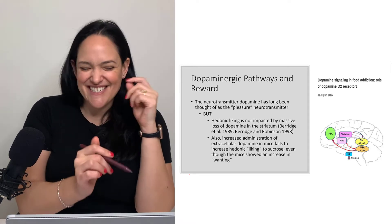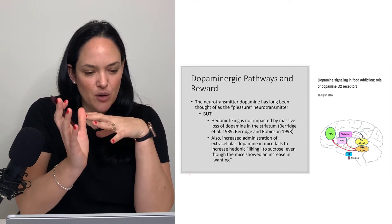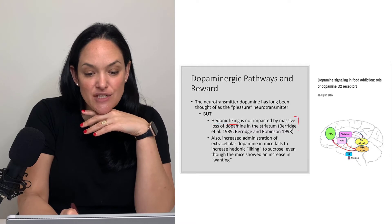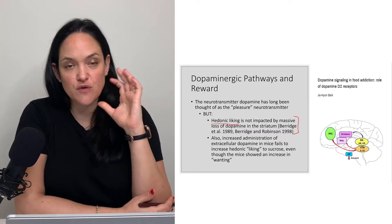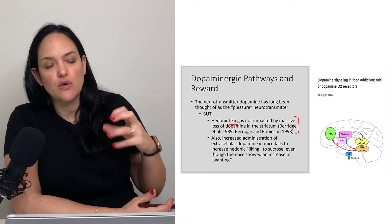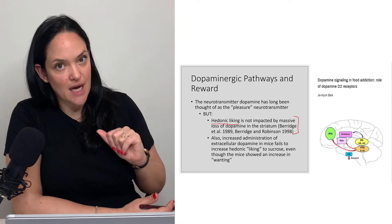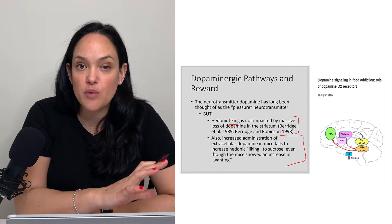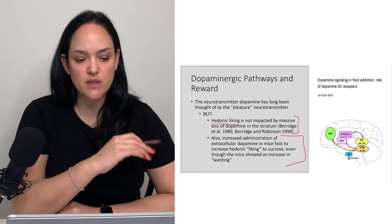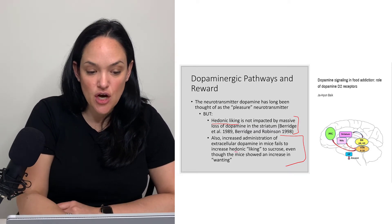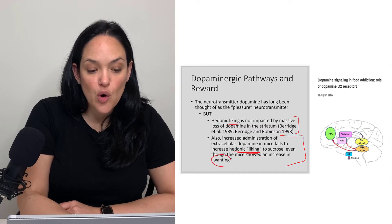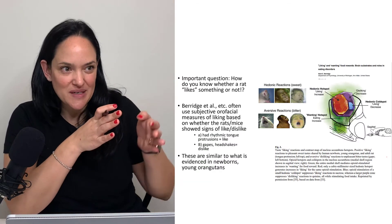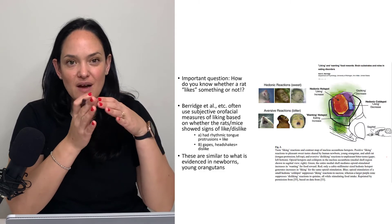Some evidence suggests dopamine is not about liking: when we look at hedonic liking, it is not compromised by massive dopamine loss. If there's less dopamine in the striatum, you would expect less liking if it were the liking neurotransmitter, but it doesn't seem to impact that. Also, if we administer a lot of extra exogenous dopamine to mice, we don't see that it changes their liking of something, although we see a lot more wanting.